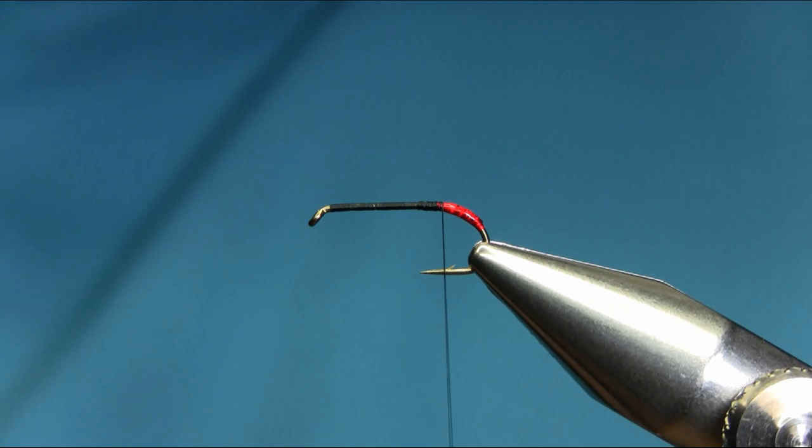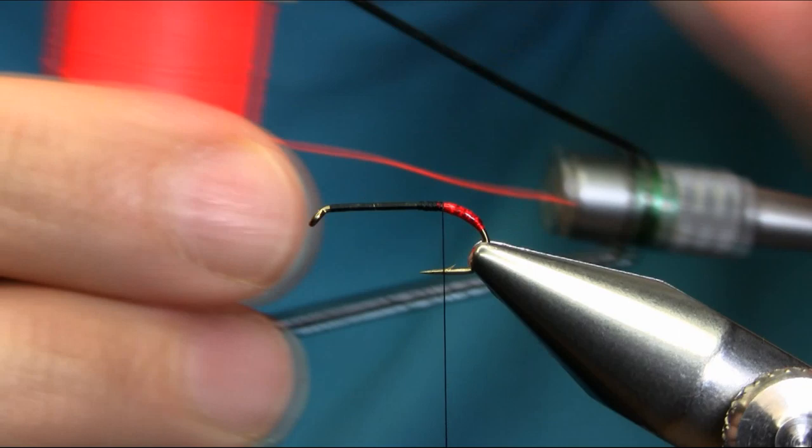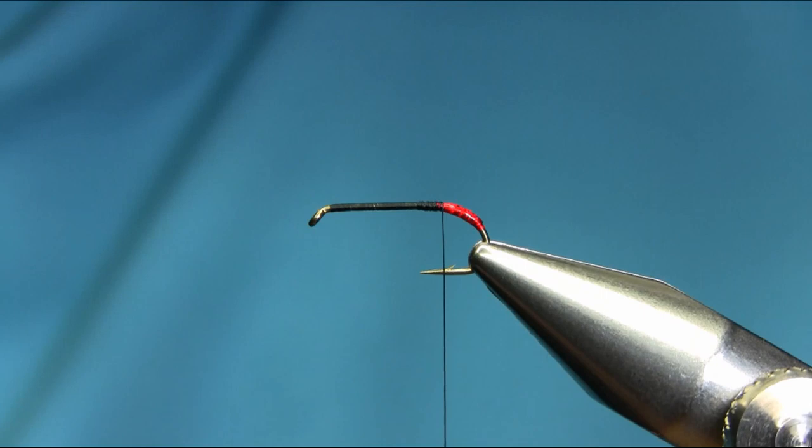The tail I'm using is Glow Brite. This is number 12 fluoro green, and also number 5 hot orange. So this is the tail.